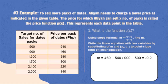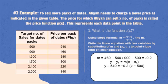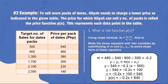Now, using the point slope form of linear equation, which is y - y₁ = m(x - x₁), we will be able to get the p function of x. Let us substitute the values 500 and 540 to x₁ and y₁ respectively. By solving, we will come up with p(x) = -0.2x + 640.